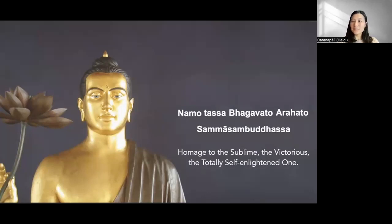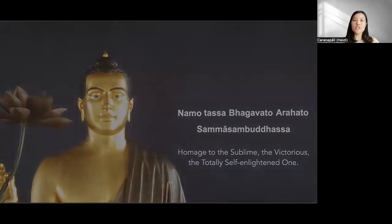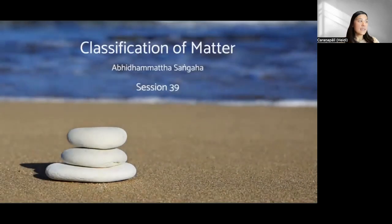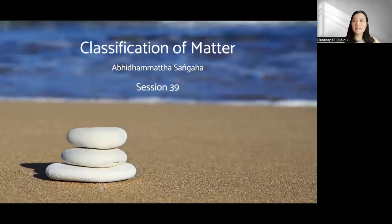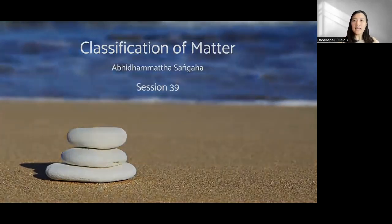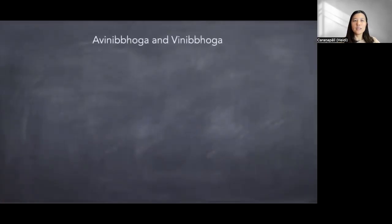Today we're going to continue a little bit more about the classification of mata. Last week we discussed different classifications of mata and separated them into different groups. Today we have only one other classification left from last week, and that is called the Avini-boga and Vini-boga — so inseparable and separable. Today we're going to start with this.